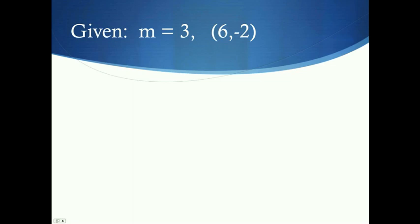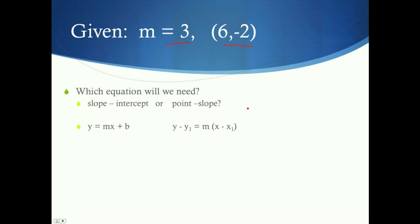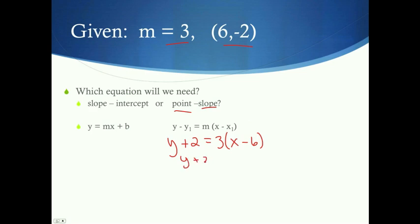Example 4: slope of 3 and ordered pair (6, negative 2). We have slope and a point, so we use point-slope. Plugging in: y minus negative 2 equals 3 times x minus 6, which gives y plus 2 equals 3x minus 18. Subtracting 2 gives y equals 3x minus 20.